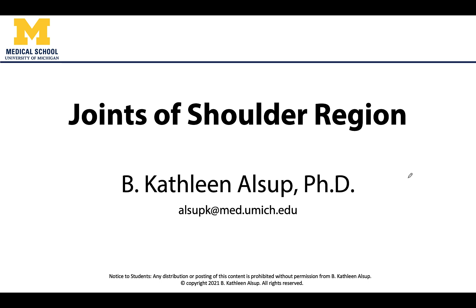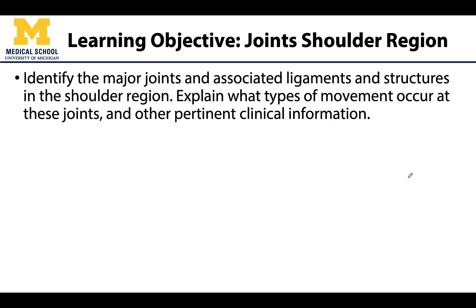Hello anatomy colleagues, this is Dr. Alsup and we will be discussing the joints in the shoulder region. We are going to invest a little time here, so sit back and get ready, as this is a complex and clinically relevant region. The mobility of the glenohumeral joint lends to a decrease in stability, and with that decrease in stability there is an increase in injuries or damage to this region, so it comes up often in many clinical practices.